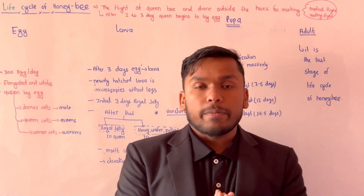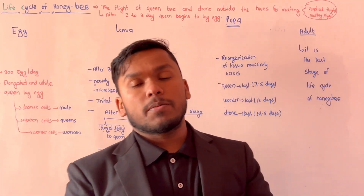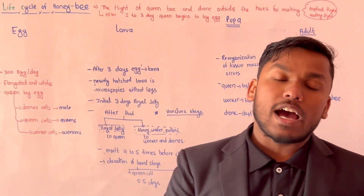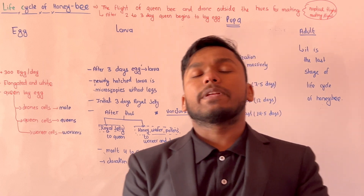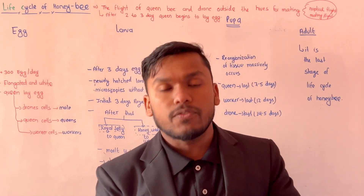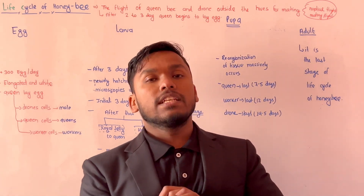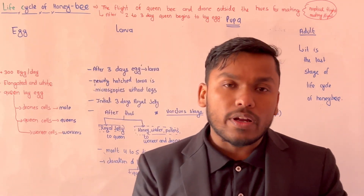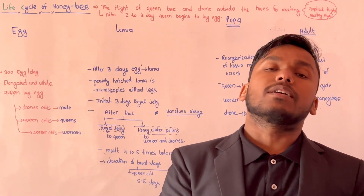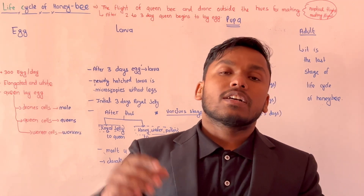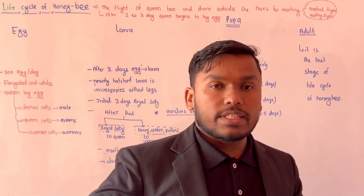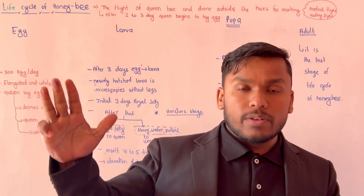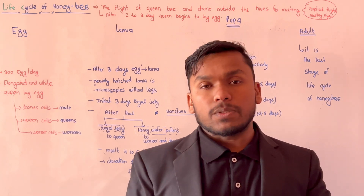Hello and welcome to the YouTube channel of NEPALY. Today, the life cycle of the honeybee is completed in a few stages — four stages: egg, larva, pupa, and adult.